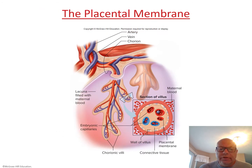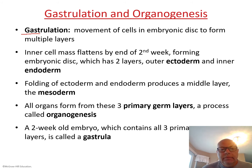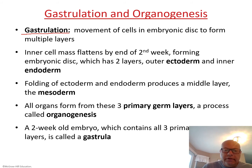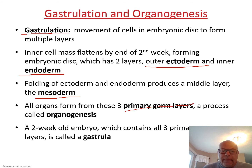Gastrulation is where cells move from the disc of the embryo to form multiple layers. These are divided into the ectoderm (outer layer), endoderm (inner layer), and mesoderm, which forms when they fold. These are the three primary germ layers.